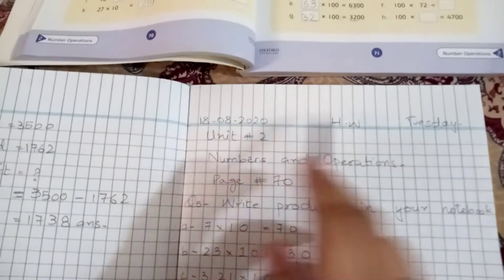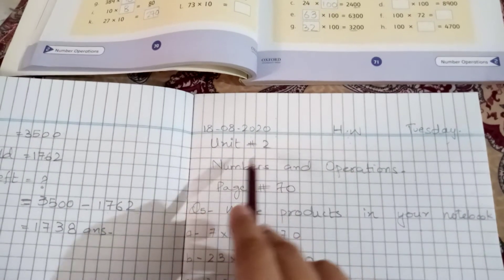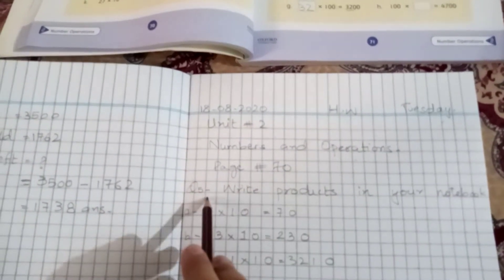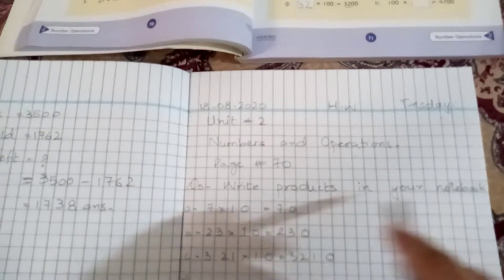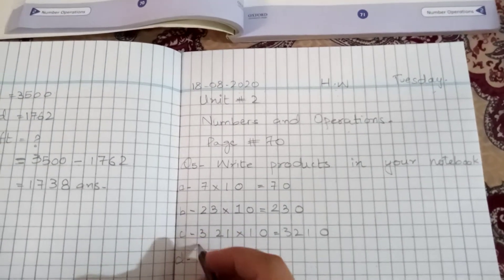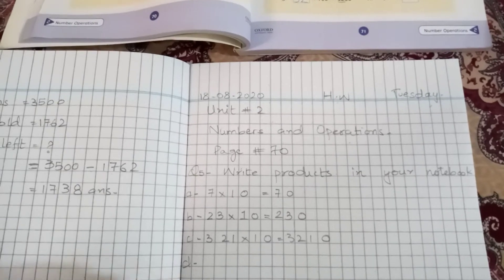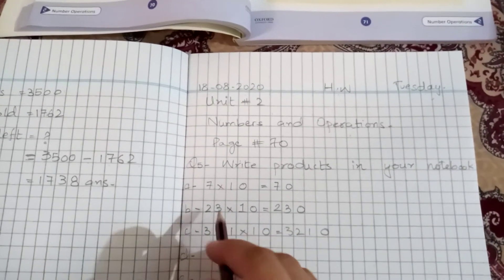Before I guide you, I will give you homework. This is so easy. Just you have to prepare page 18, homework 18-8-2020, unit number 2, numbers and operations. Page number 70, question number 5. Write products in your notebook. I will tell you about A. I have written A, B, C, D, E, F, G, I, J, K, L, M, N, O.